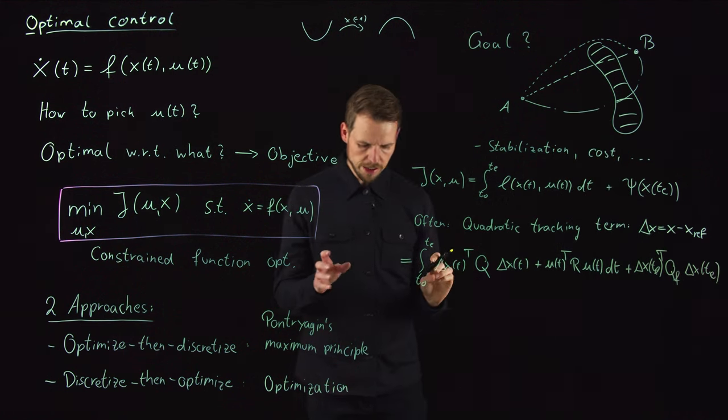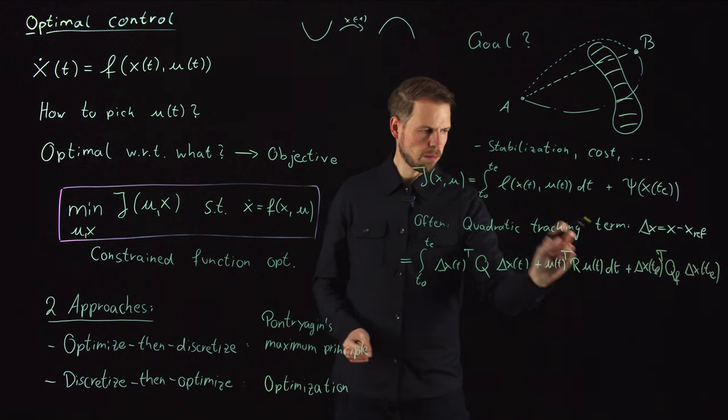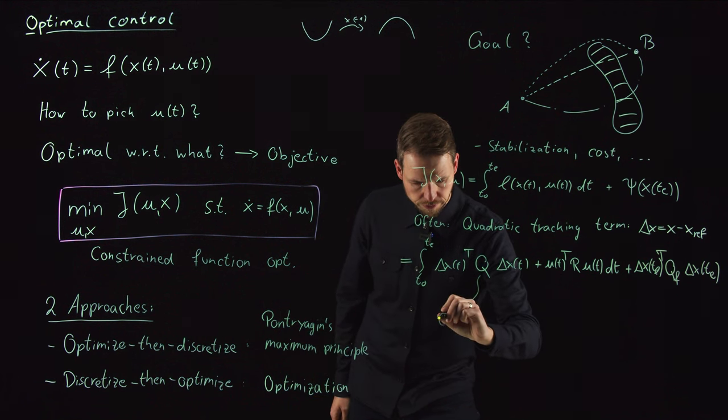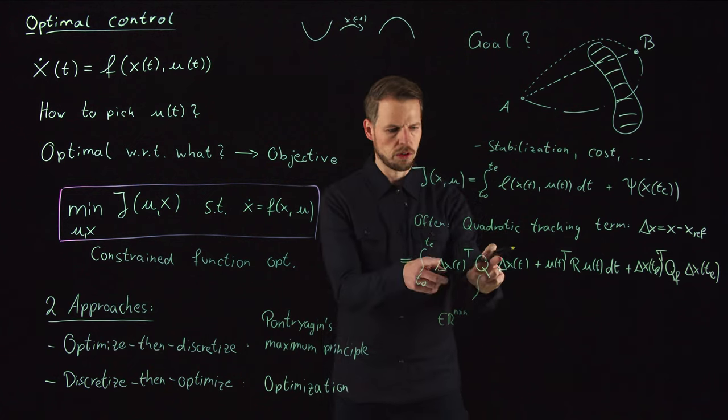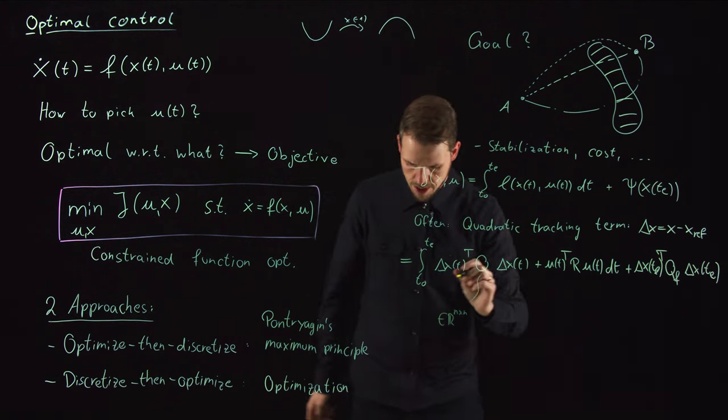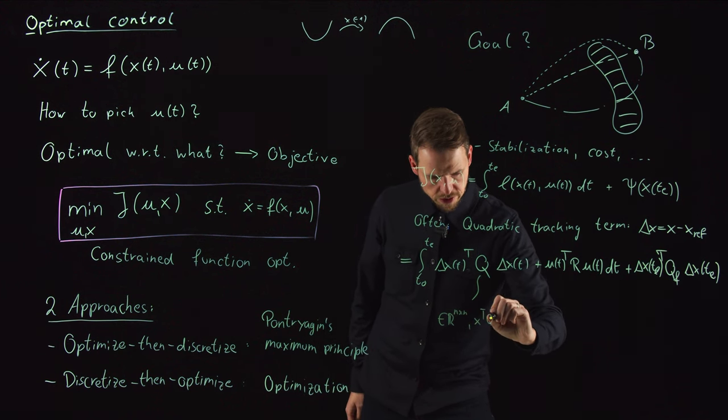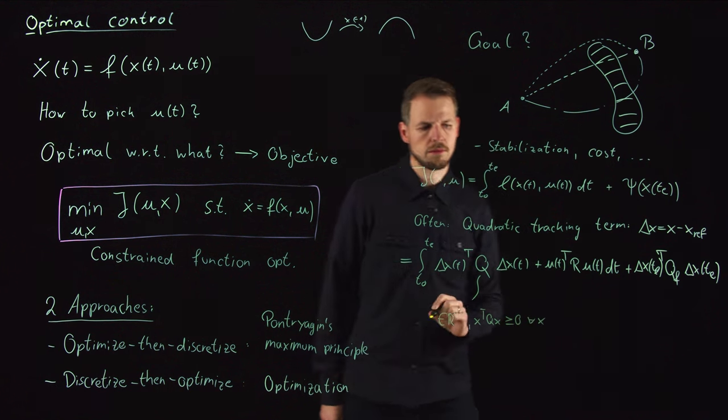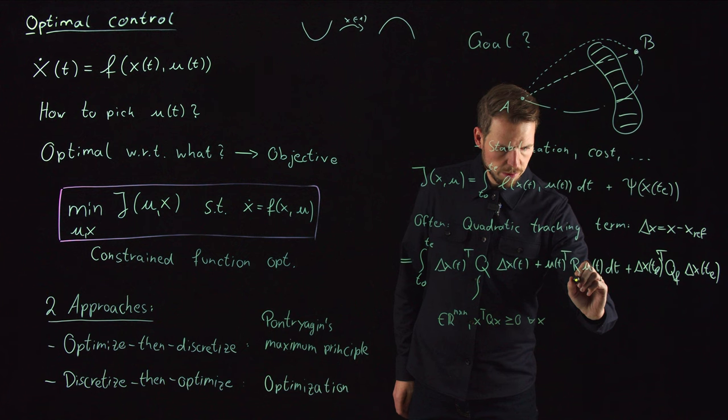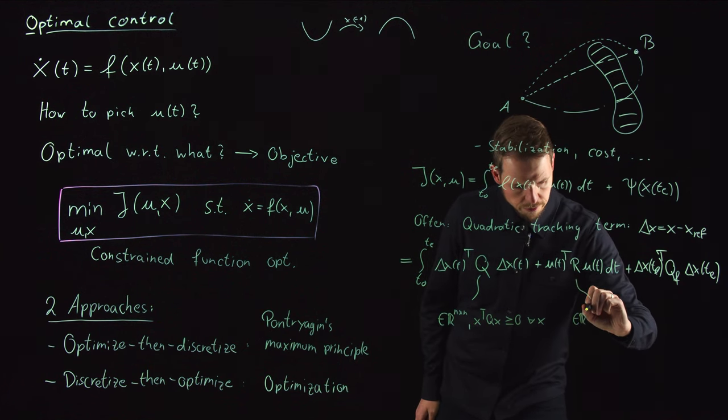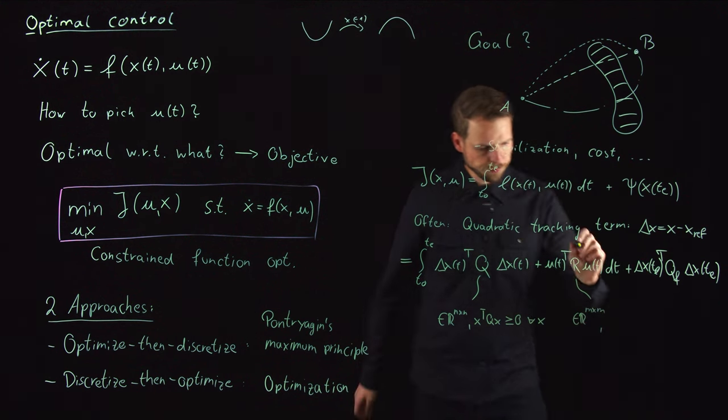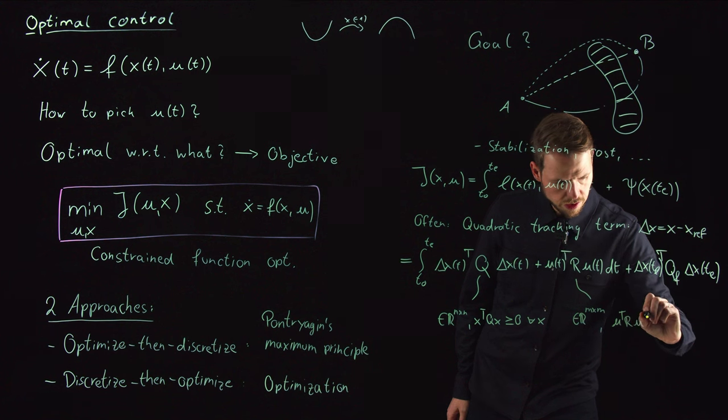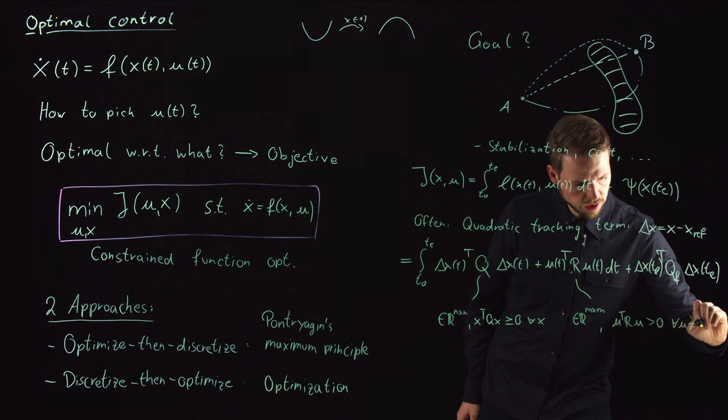This is very nice because we can formulate conditions for the matrices for the system to be well-behaved and have a good solution. This Q is usually a matrix in n by n to get a weighted norm of the differences. What we usually ask is that this is a positive semi-definite matrix, which means this quadratic form is non-negative for all x. We ask the same for Q_f.